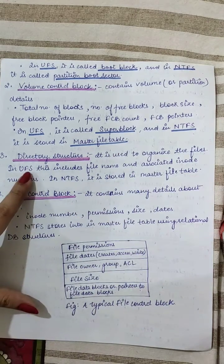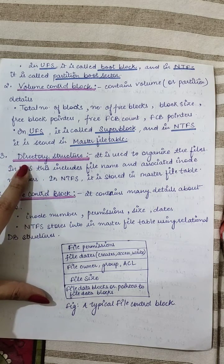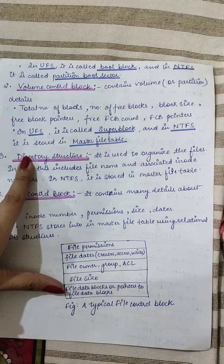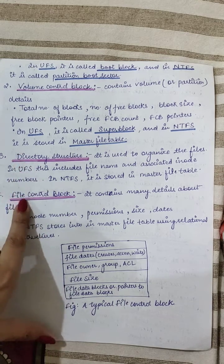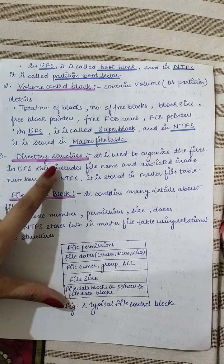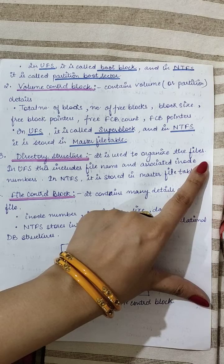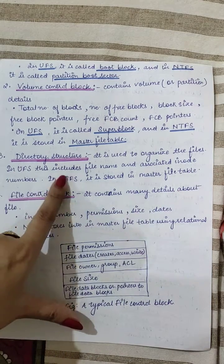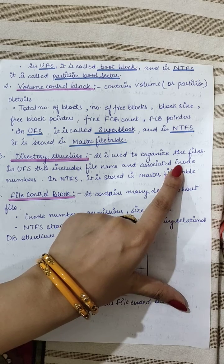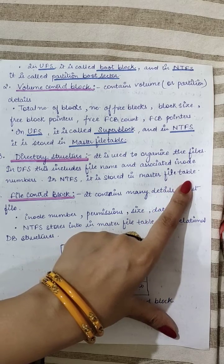The third on-disk structure is the directory structure. We use the directory to organize the files — all the information in the form of attributes — and we can know the location of a file from it. In UFS this includes the file name and associated inode number. In NTFS the directory structure is stored in the master file table.